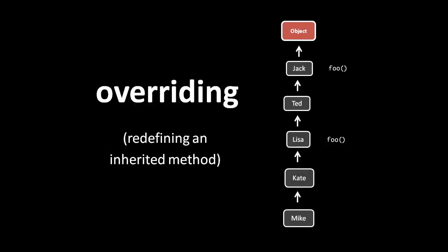To override in object-oriented programming means to redefine an inherited method. For example, we have a chain of inheritance from object to Jack, then to Ted, Lisa, Kate, and down to Mike. If the Jack class is defined to have a method named foo, then all of its descendants will have that method as well. However, if in the Lisa class we define a method also named foo, then Lisa will have that foo instead of the one inherited from Jack. In fact, Kate and Mike will inherit the foo of Lisa, not the foo of Jack.